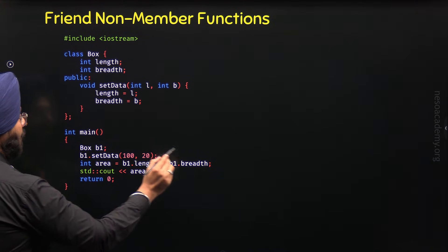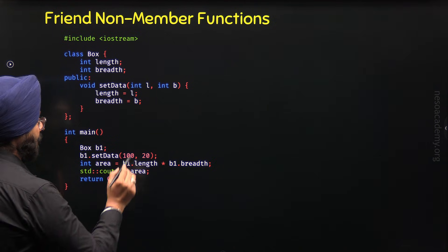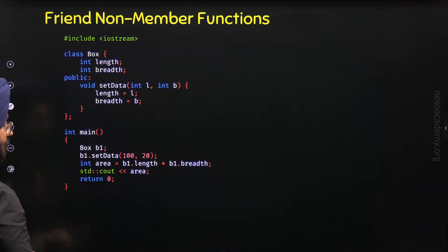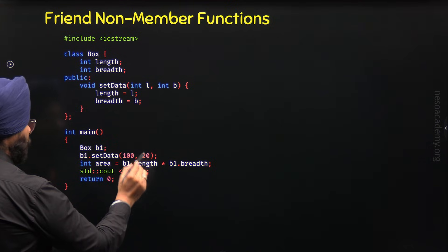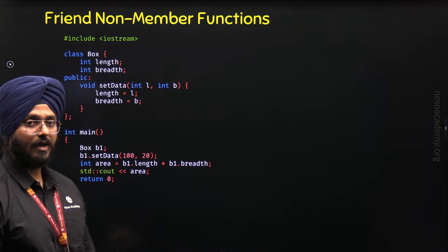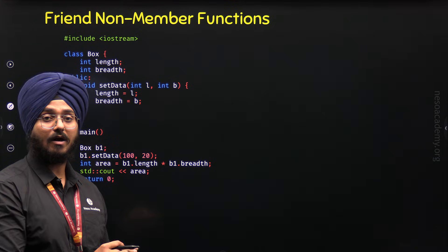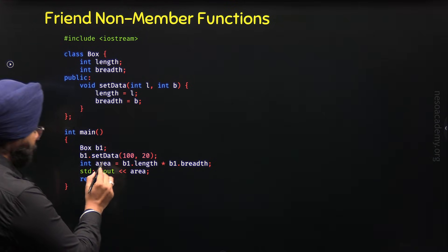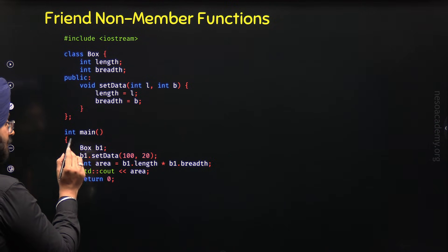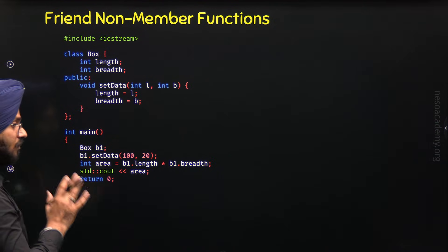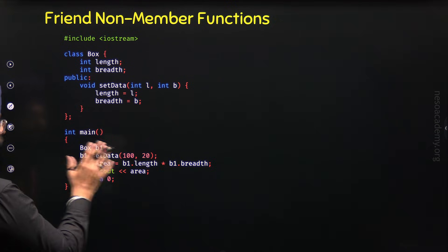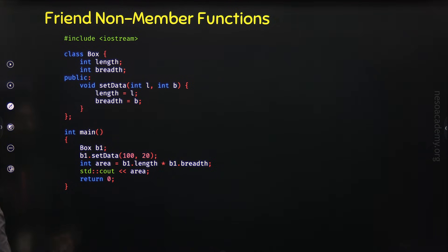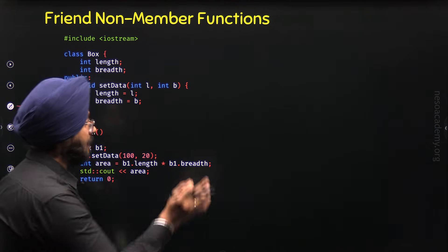Now I am calculating the area of the box by accessing length and breadth properties through object b1, multiplying them and storing the result in the area variable. Then printing the area using cout. It seems like we will get 2000 on the screen, since 100 times 20 is 2000. But that's not true — we will get an error from the compiler.